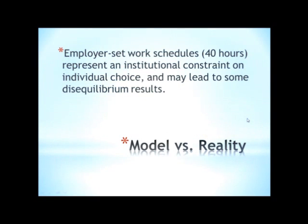What I want to point out first are just a couple of ways in which the model doesn't exactly reflect what we see in real labor markets. The most obvious is that in our model, the worker chooses the optimal number of work hours. But the worker can't just go into their employer and say, I've chosen to work 42 hours a week, or I've chosen to work 38 and a half hours a week. Employers set work schedules — a lot of times 40 hours, or 35 hours, or 20 hours — depending on what the job is, but these are institutional constraints on individual choice. So we can sometimes get some disequilibrium results: somebody who wants to work 45 hours a week but is only working 40, or someone who wants to work 35 but is forced to work 40.